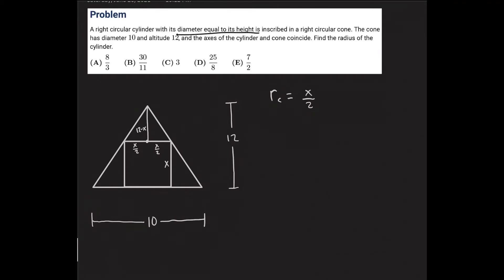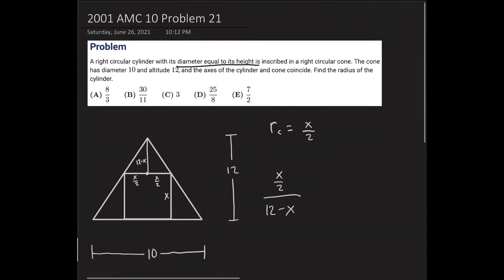The ratio of the radius formed by the top base of the cylinder to the altitude of the small cone formed above it is x over 2 to 12 minus x. So I can write that as x over 2 divided by 12 minus x. I know by angle-angle similarity — namely this angle right here, and both these are right angles — that the two triangles are similar.